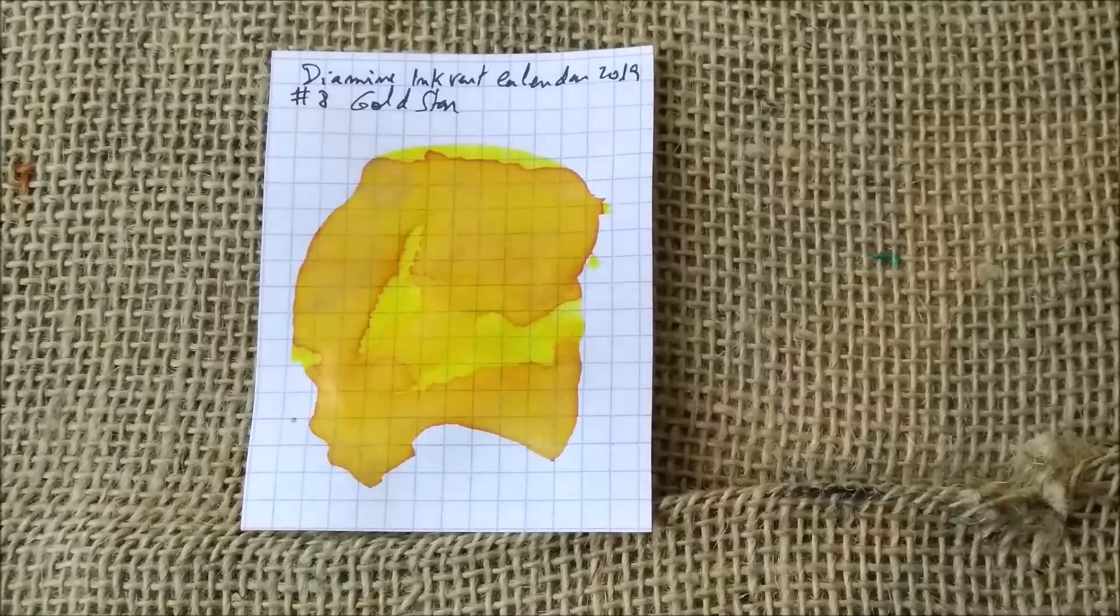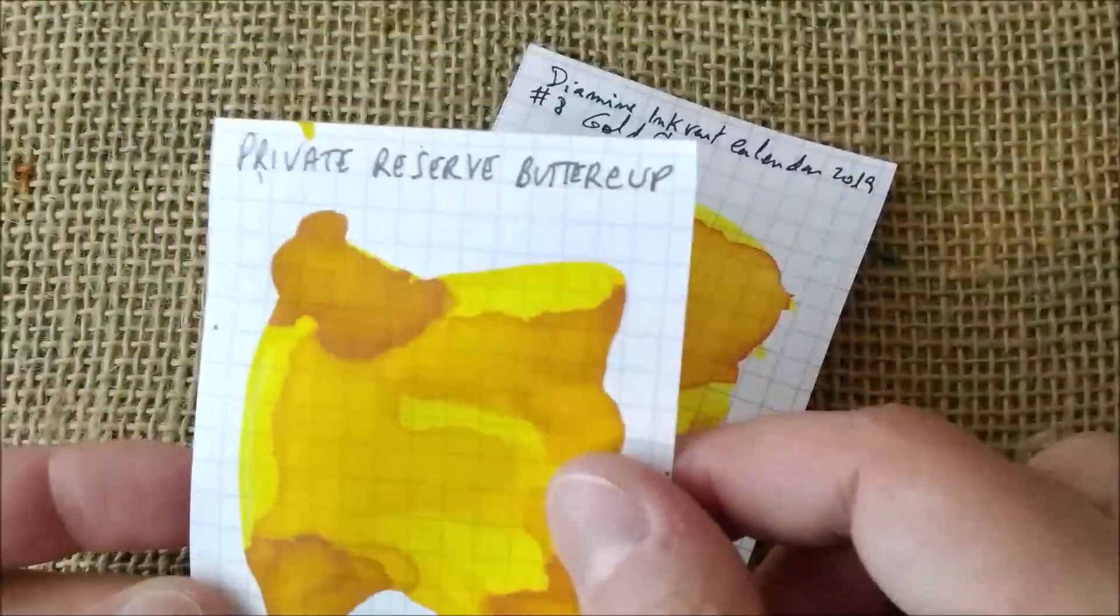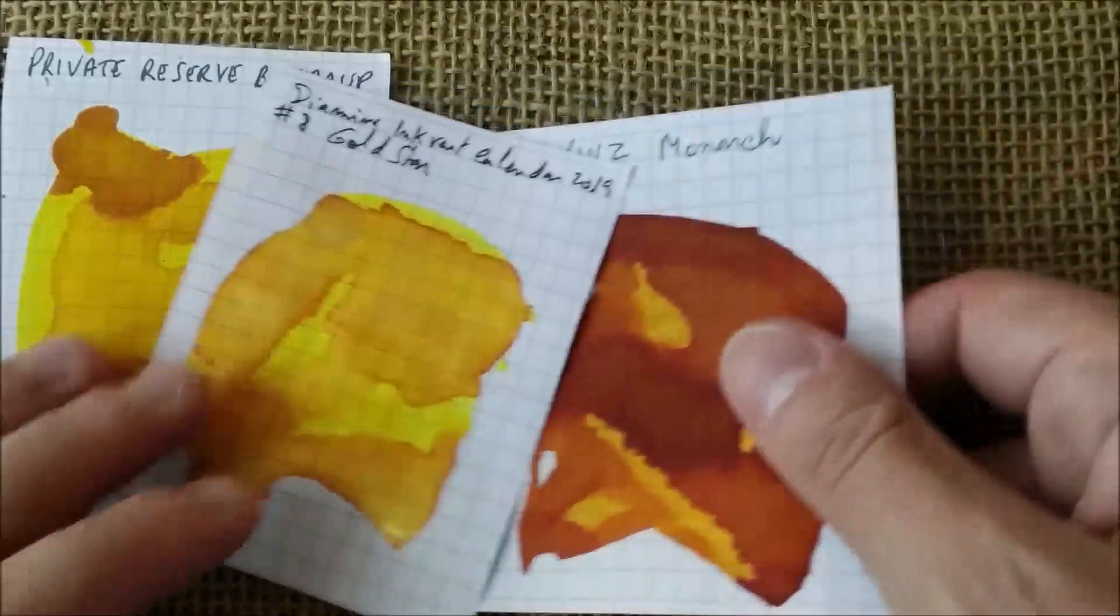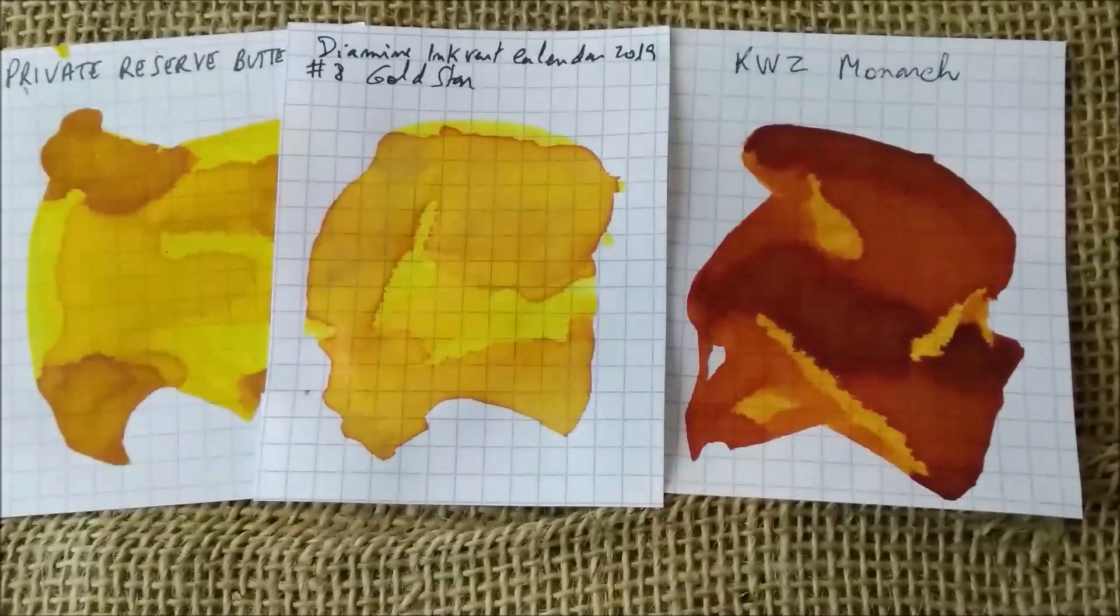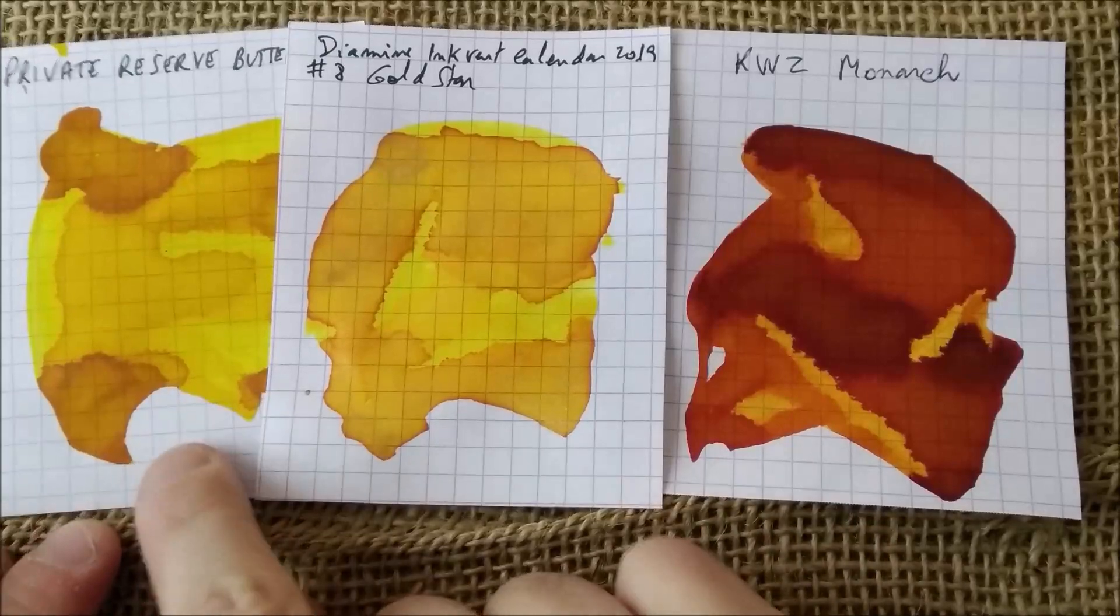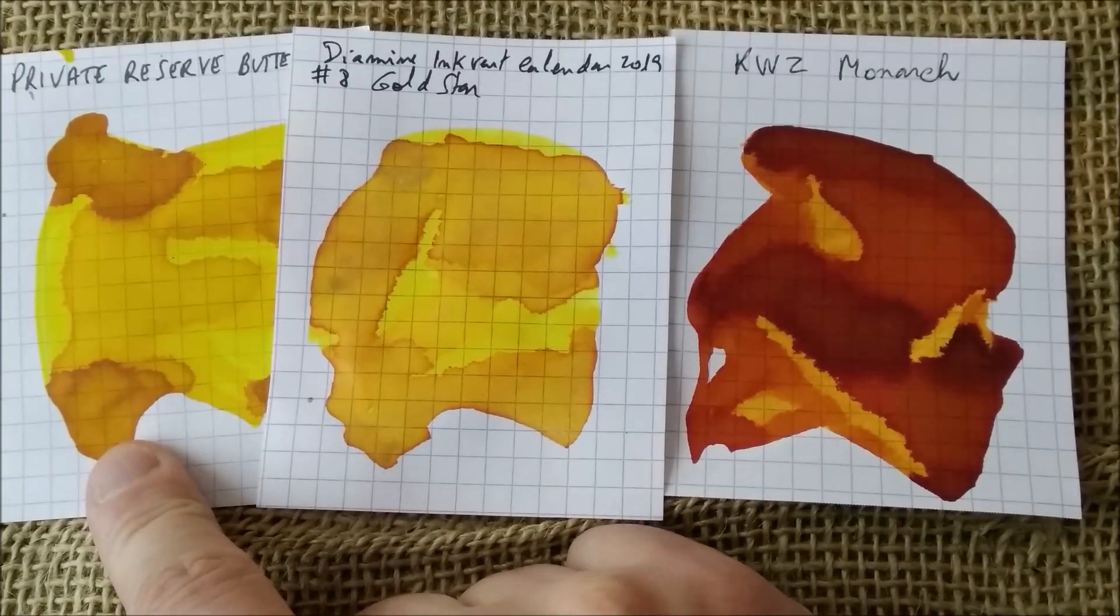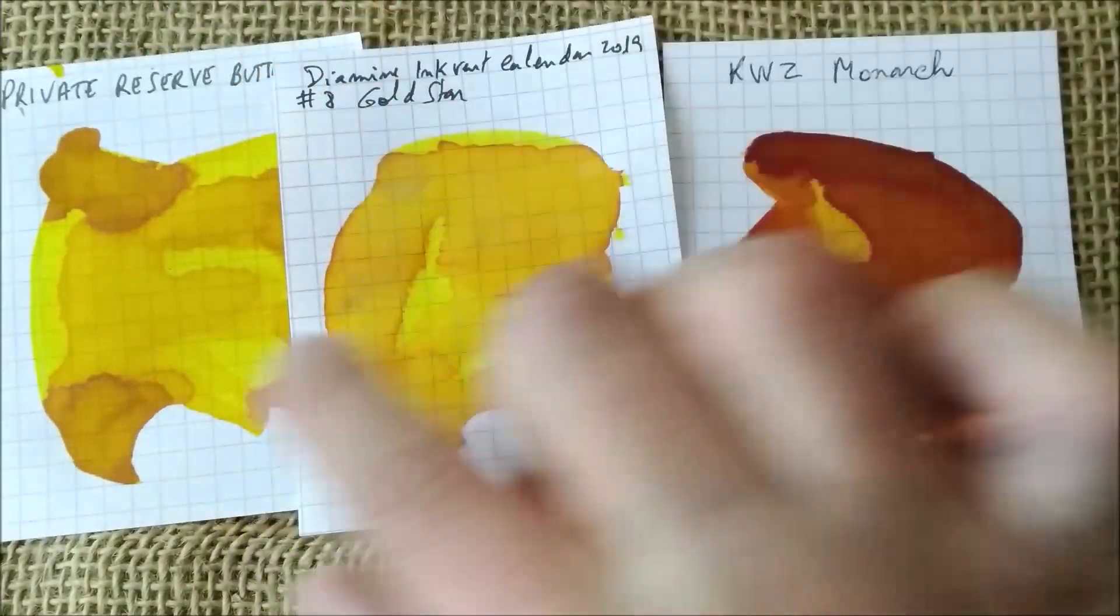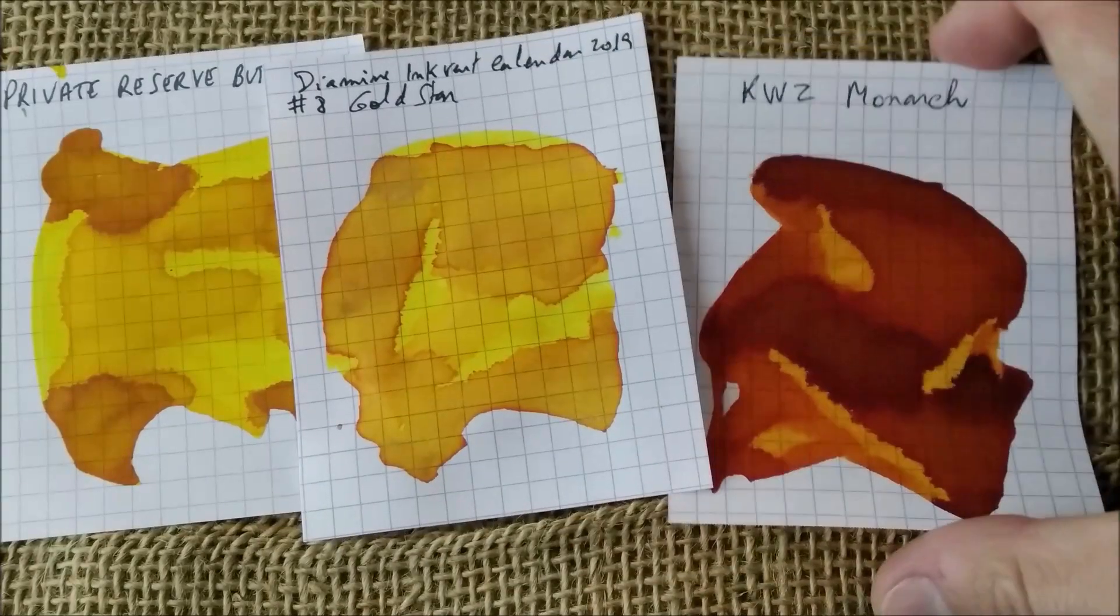Now I have here two other inks. This is the Private Reserve Buttercup and the KWZ Monarch. You may see these are two different inks. This one is a yellow ink. It is a little bit darker on the darker zones but it has no glitter. I would say this is quite equivalent to this one.